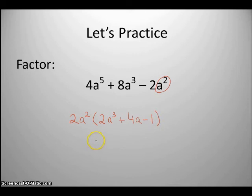Now the other way you can look at it is you can say, okay, 2a squared times what gives me 4a to the 5th? 2a squared times what gives me 8a cubed? 2a squared times what gives me negative 2a squared? Now remember, you can always go back and check these just by distributing.